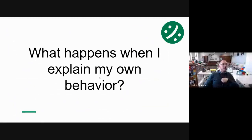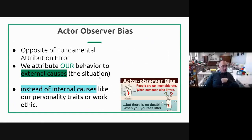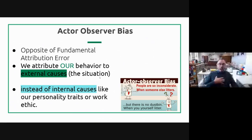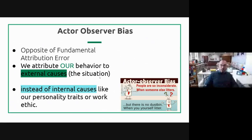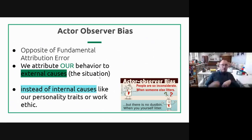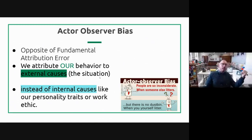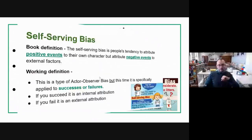What happens when I explain my own behavior? I reverse it - it's called the actor-observer bias. It is the opposite of the fundamental attribution error. We attribute our own behavior to external causes. If I cut you off and look back, I'm thinking 'I was late, sorry' - I don't think 'I'm a terrible person.' I make external attributions to forgive my behavior. When I apply it to someone else I make the fundamental attribution error, but when I apply it to myself I make the actor-observer bias.